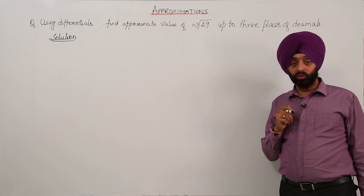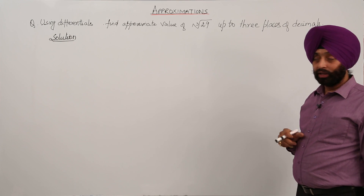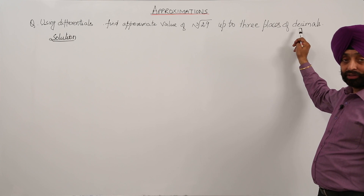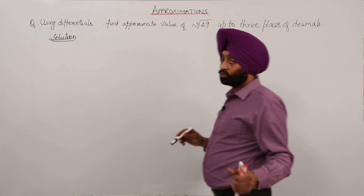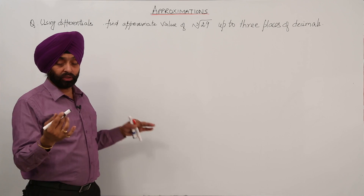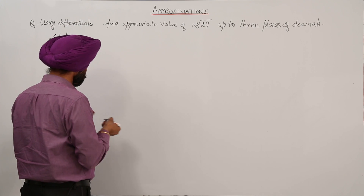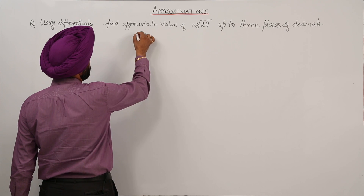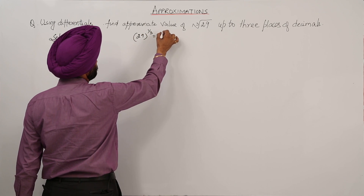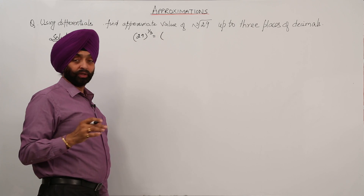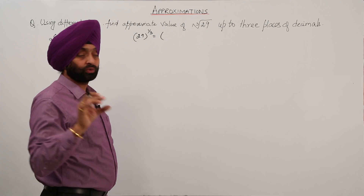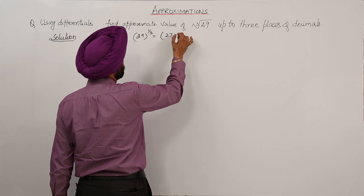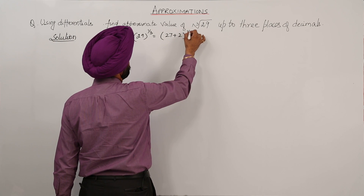In this question we have to find the cube root of 29, and it is clearly mentioned that we have to find the answer in decimals. So now let's proceed with the simple steps. We can write 29 as 29 raised to power 1/3. Now, the nearest cube root to 29 is 27, so we can write it as 27 plus 2, raised to power 1/3.